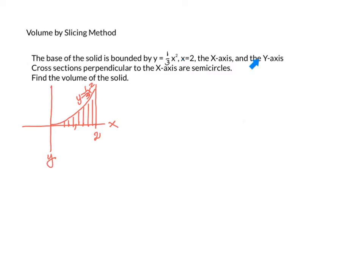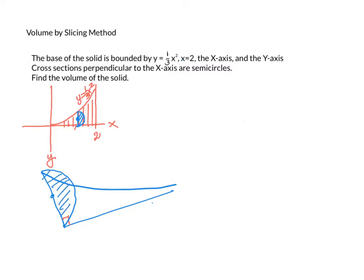Cross-sections perpendicular to the x-axis are semicircles. Let's draw it here — here's the semicircle, that's a cross-section. Looking at the base of the solid from a different angle, perpendicular cross-sections are semicircles. Here's a semicircle — this is a perpendicular cross-section. And if we go further out, we have a smaller semicircle, and that would be a perpendicular cross-section of this solid.